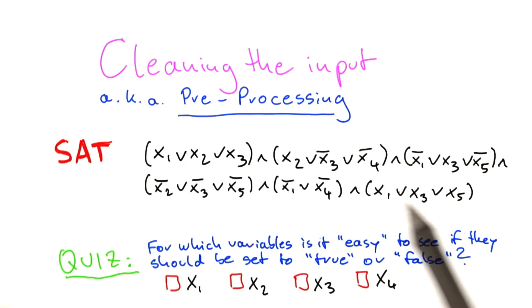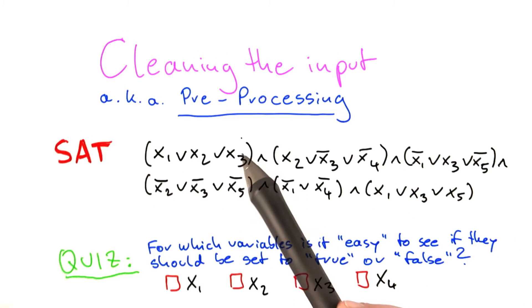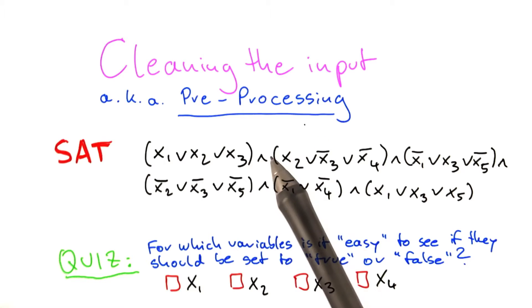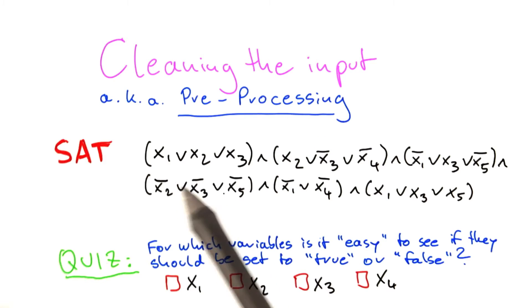So for the next quiz, I've changed the Boolean formula here a bit. And you'll notice that none of the preprocessing rules that we had in the previous quiz apply now. So there's no clause here with just a single variable, so that rule doesn't apply.